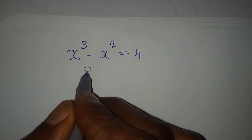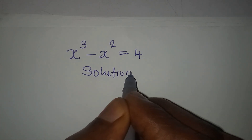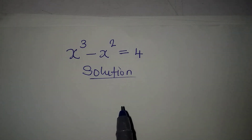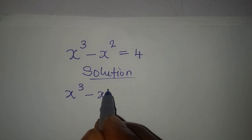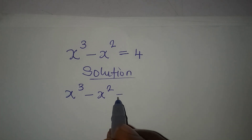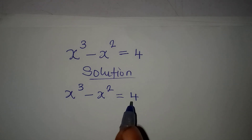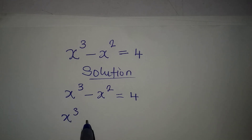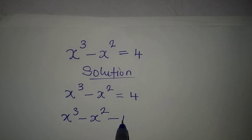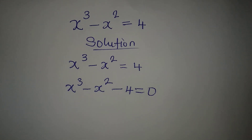Hello everyone, let's provide the real solution to this problem. We have x to the power of 3 minus x to the power of 2 equal to 4. Now bring 4 to the left, so we have x to the power of 3 minus x to the power of 2 minus 4 equal to 0.